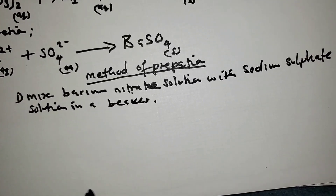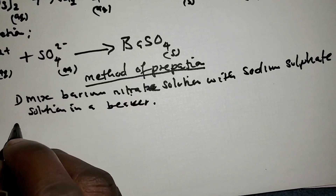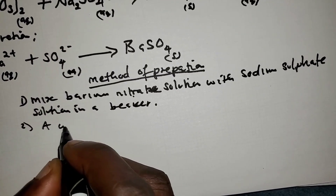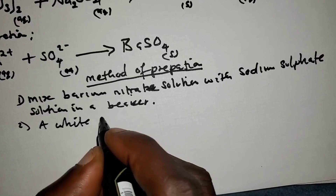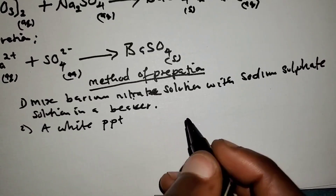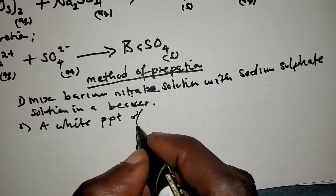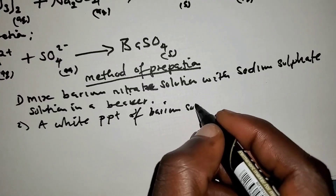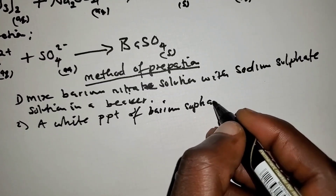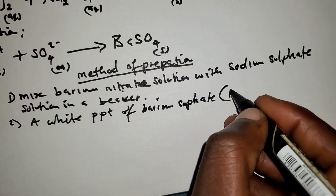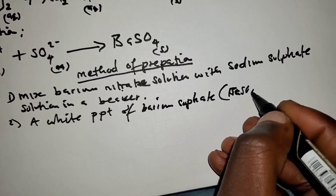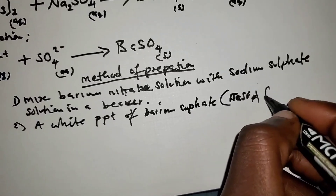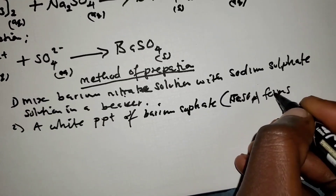Step two: a white precipitate of barium sulfate, BaSO₄, will form when the two solutions are mixed in the beaker.